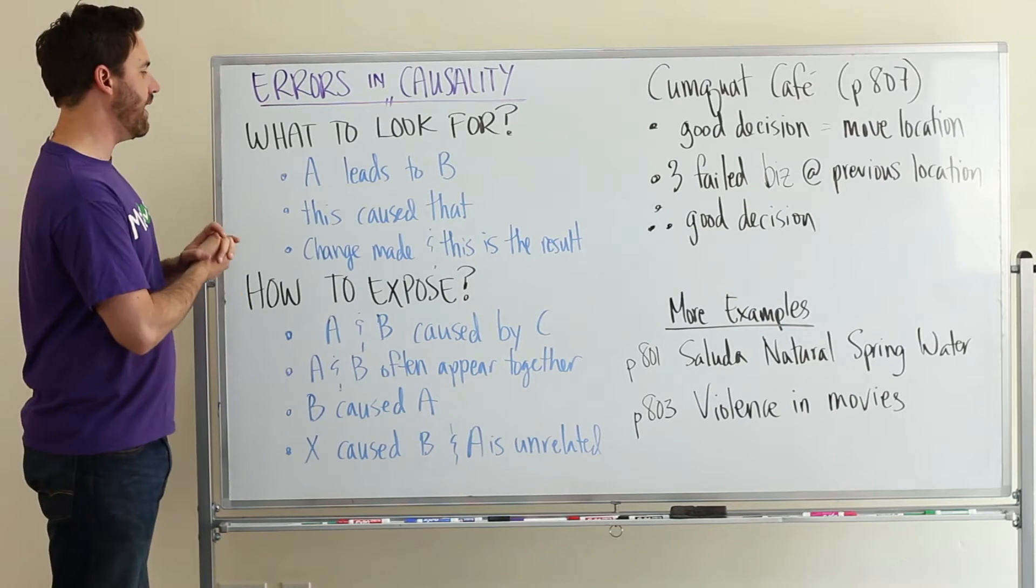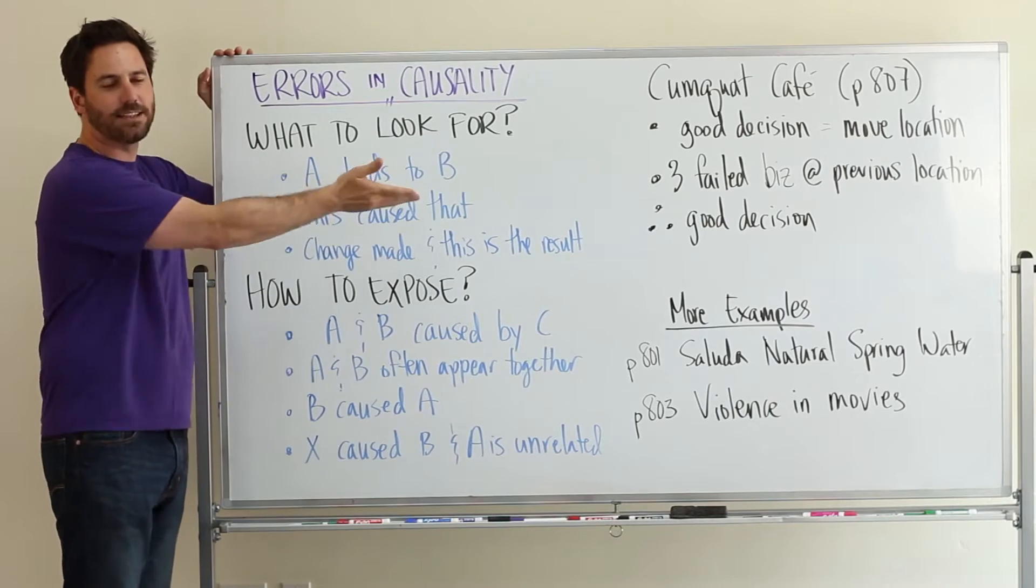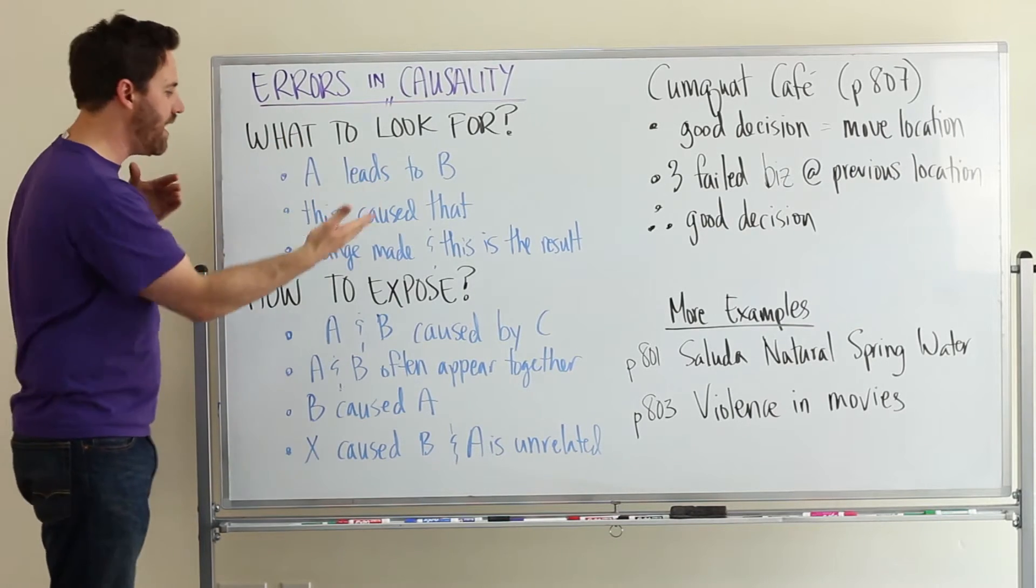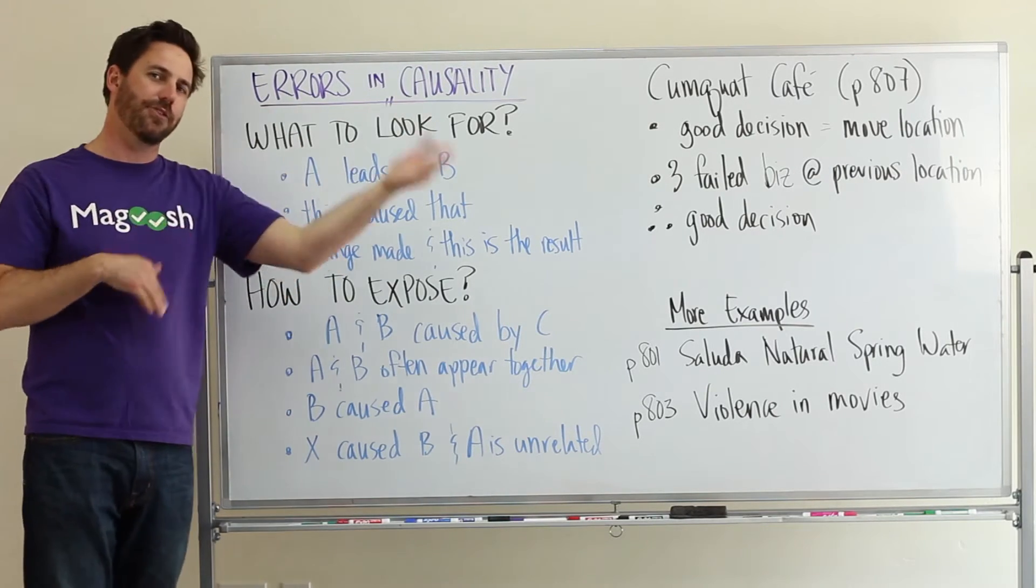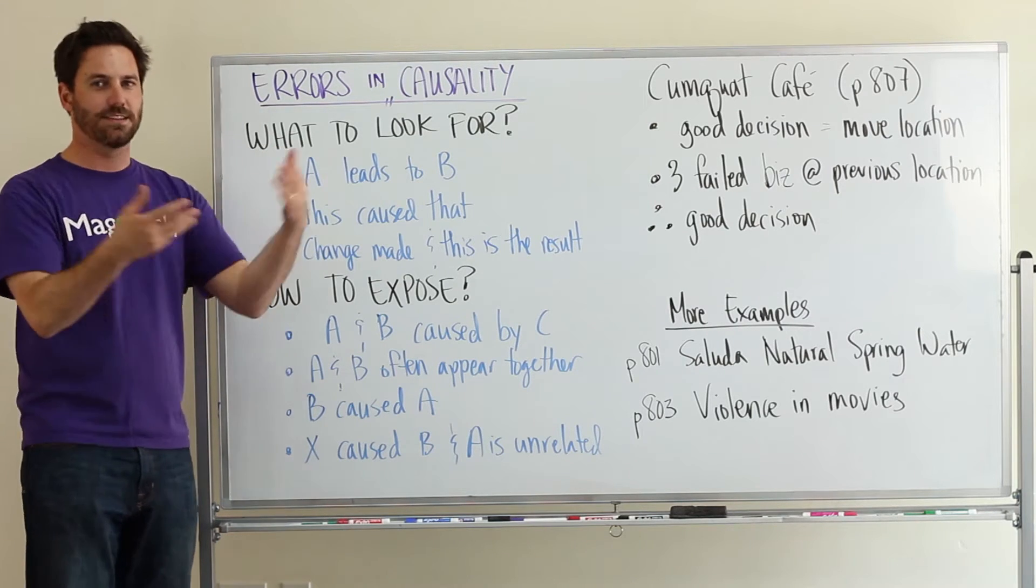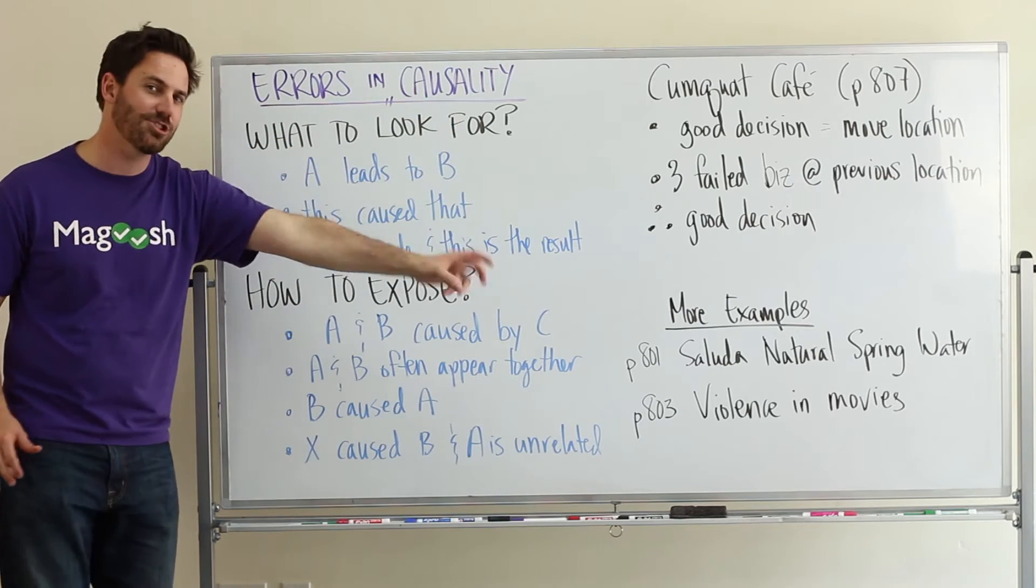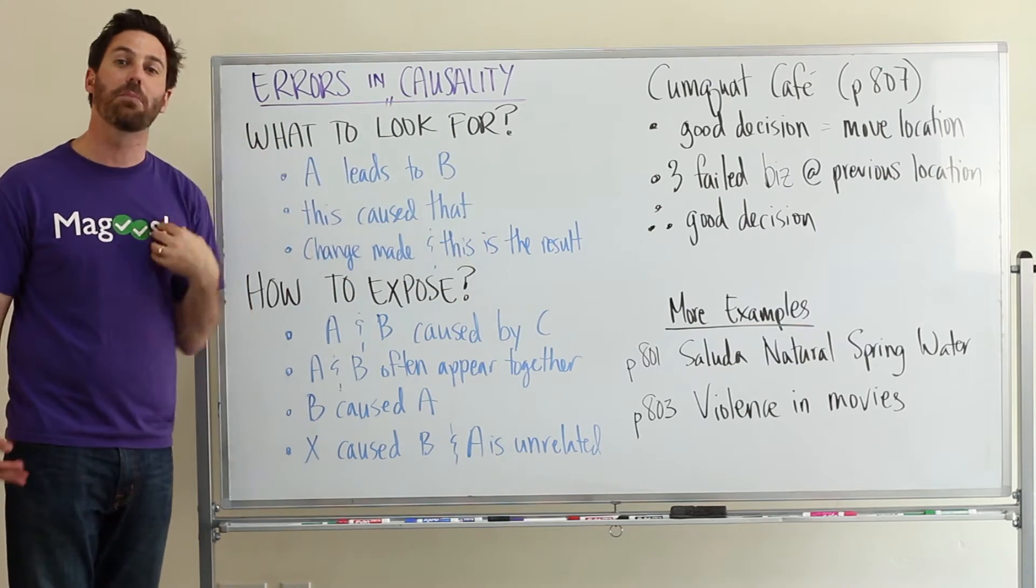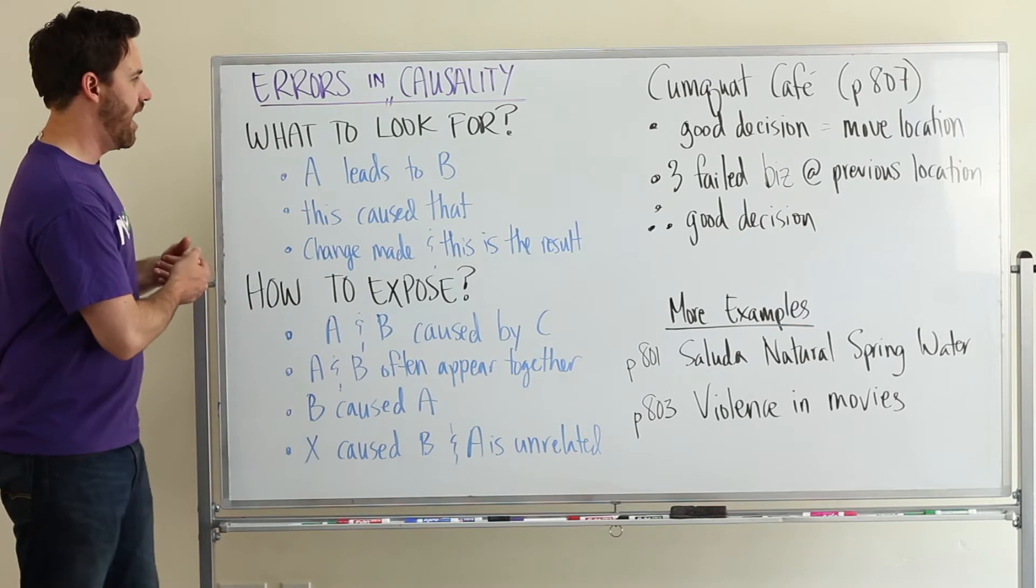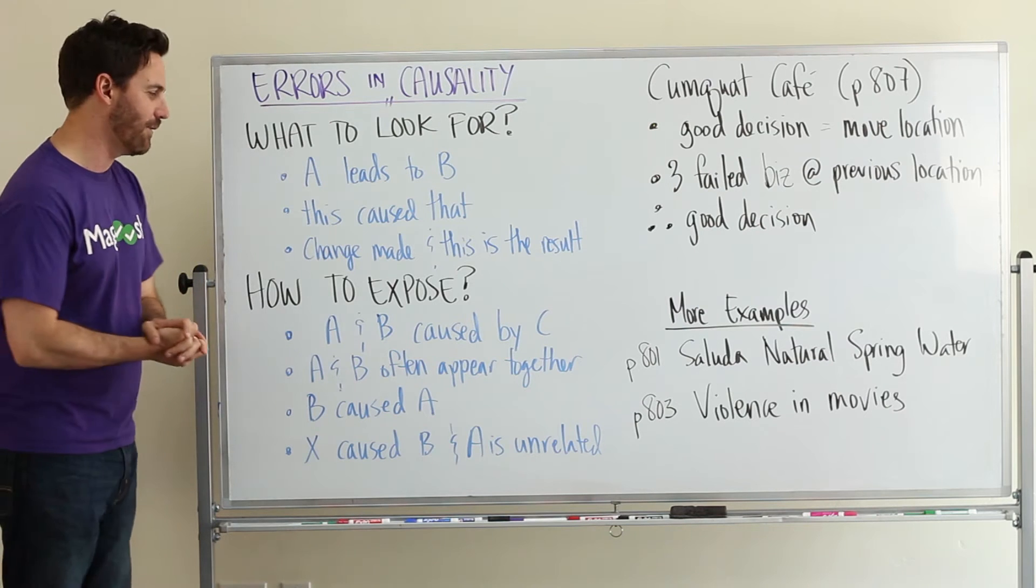So, what you should be looking for when you're reading through an argument is things where they're talking about something leading to something else, so A leads to B, or when they talk about this causing that. Often times it might be something like a business changes something, and then they saw this result. Or maybe they saw another business change something, and then saw a result, and so they want to apply it to their business. These are all going to be great opportunities for you to expose a flaw in the argument.